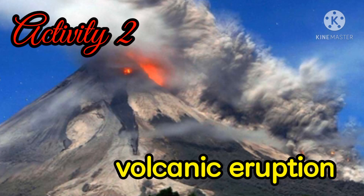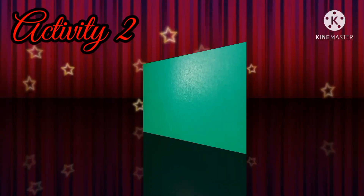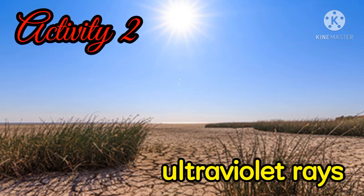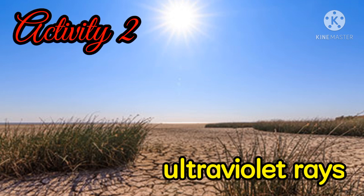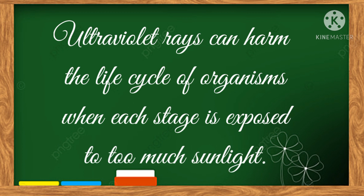Typhoon and volcanic eruption affect the metamorphosis of frogs and other living organisms in the area. What is the effect of ultraviolet rays on the life cycle of most animals? Is it beneficial or harmful? Why? Typhoon and volcanic eruption can also disrupt the life cycle of organisms. When these calamities occur, the habitats of most animals are destroyed and their stages of development are disrupted. Ultraviolet rays can harm the life cycle of organisms when each stage is exposed to too much sunlight.